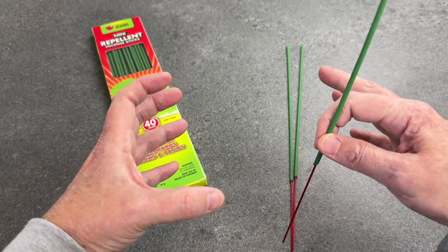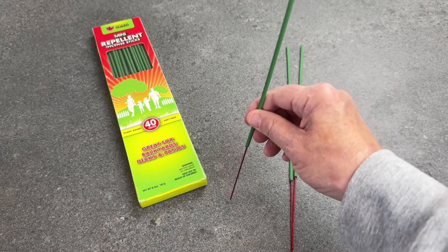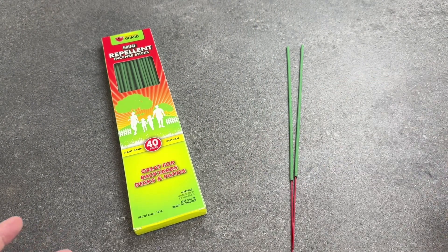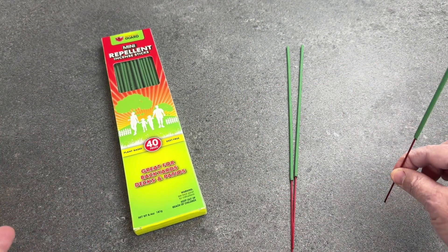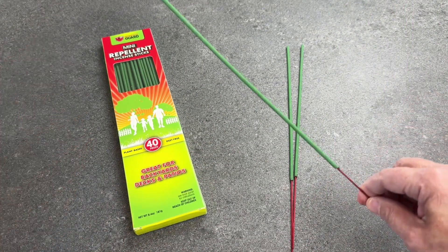You can also put them in just a planter, a pot that you might have a small plant in and just put it like that into the dirt. Put them just about 12 to 15 feet apart, and make a perimeter around the area you're going to be in.